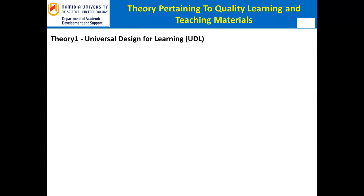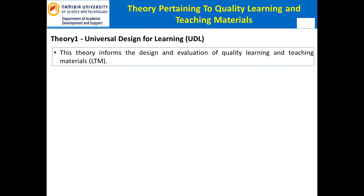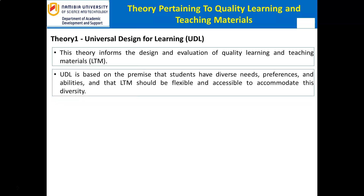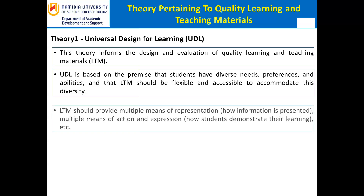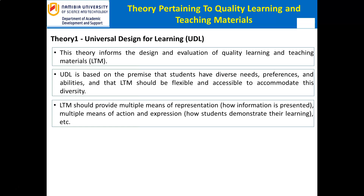Let's start with the first theory: universal design for learning. One theory that can inform the design and evaluation of quality LTM is the Universal Design for Learning, UDL, framework. UDL is based on the premise that students have diverse needs, preferences, and abilities, and that LTM should be flexible and accessible to accommodate this diversity. According to UDL, LTM should provide multiple means of representation, multiple means of action and expression, and multiple means of engagement, fostering inclusive and effective learning outcomes for all students, according to CAST, 2018.